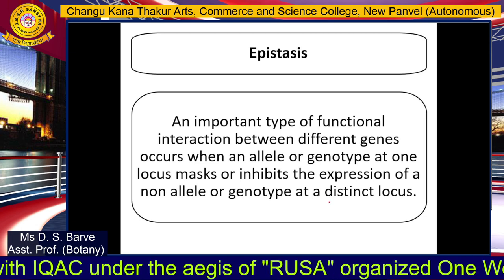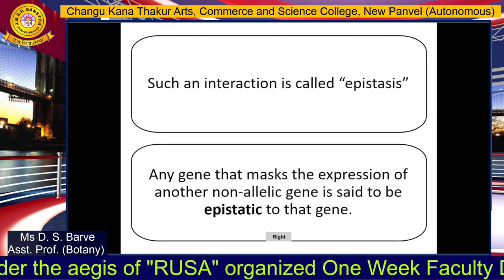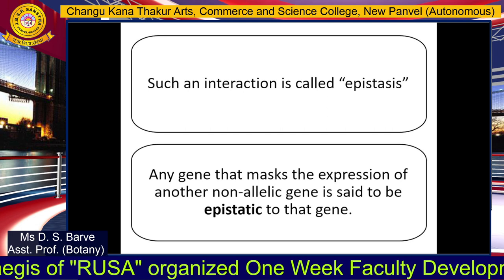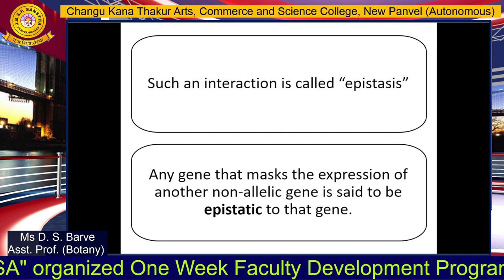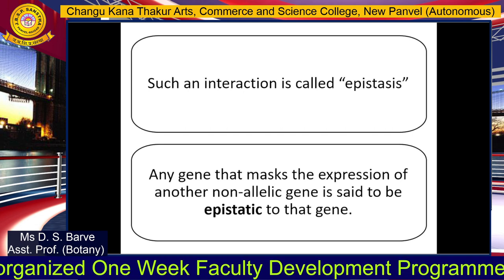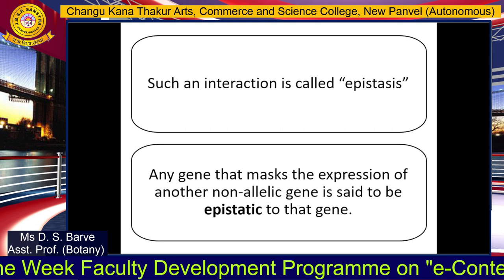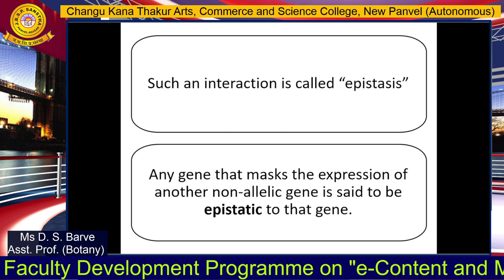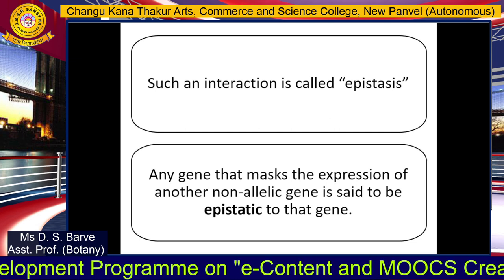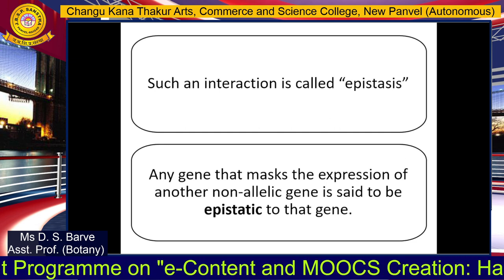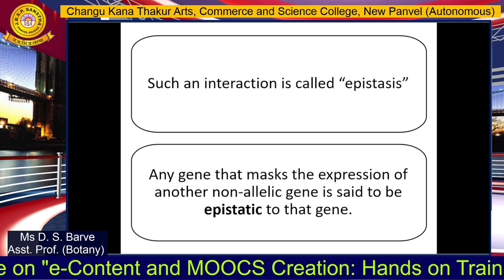Here the word 'distinct' is of great importance. In this type of interaction, that gene which masks the effect of the other gene is said to be epistatic, while that gene whose effect gets masked is said to be hypostatic. This is basically a type of interaction between two different genes occupying two different loci.